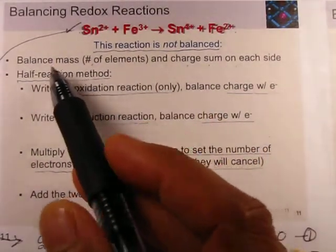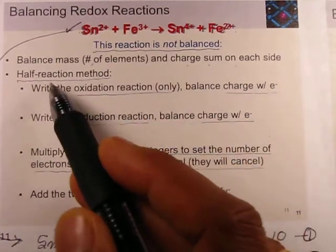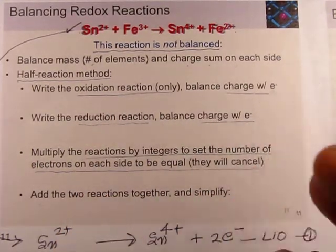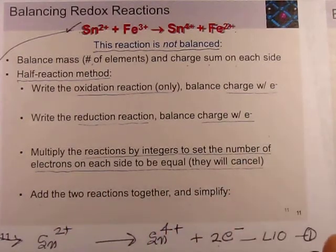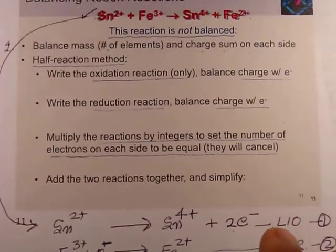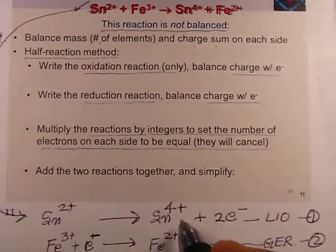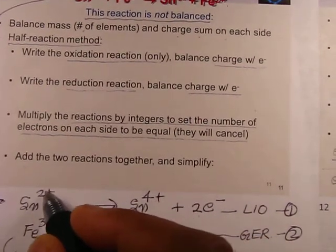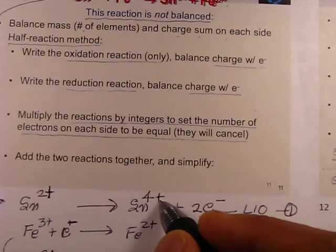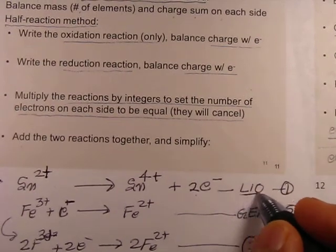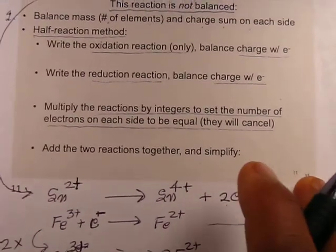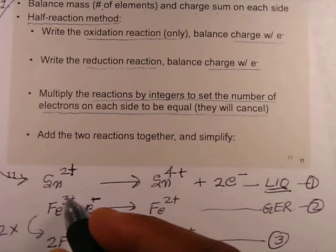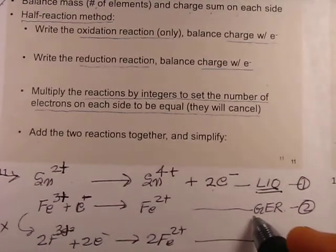First, we find the oxidation states and use the half-reaction method: balance the mass and charge, write the oxidation half reaction, and balance charge with electrons; then write the reduction half reaction and balance charge with electrons. Sn²⁺ is converting into Sn⁴⁺, meaning two electrons are lost — this is the oxidation half reaction. In the case of iron, Fe³⁺ is going to Fe²⁺, meaning it is gaining one electron — this is the reduction half reaction.